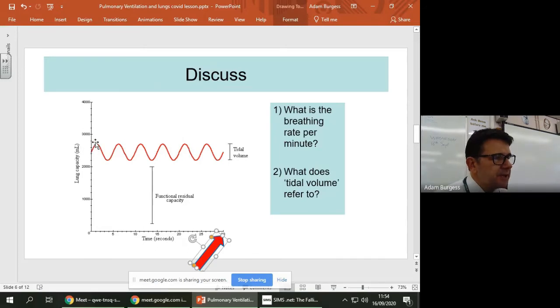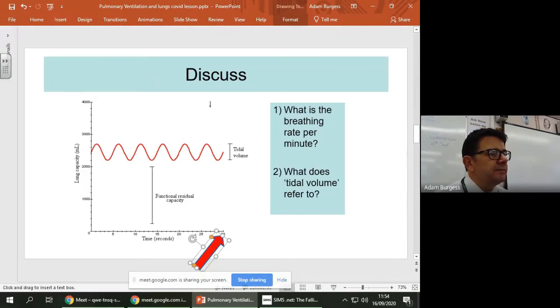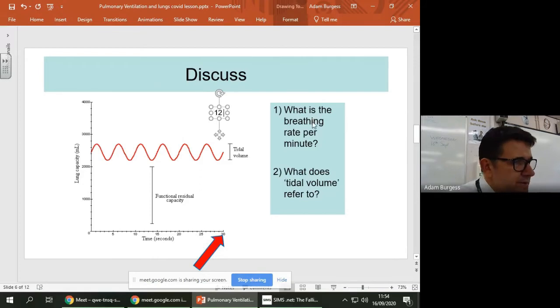So I'm going to go for the bottom peak. So one, two, three, four, five, six. So that's six breaths. So six times two is 12 breaths per minute.